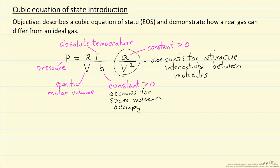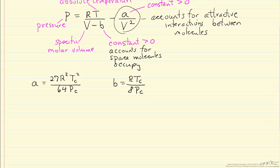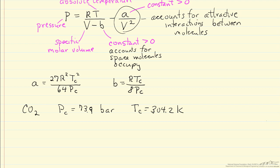These constants can be related to critical pressures and critical temperatures. A can be written as the ideal gas constant squared times the critical temperature squared over the critical pressure, and B equals the gas constant times the critical temperature over eight times the critical pressure. Let's look at some simple calculations for carbon dioxide, which has a critical pressure of 73.9 bar and a critical temperature of 304.2 Kelvin. So I can calculate A and B from those values.